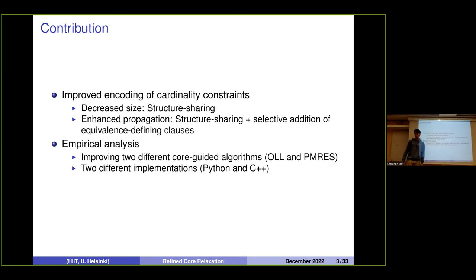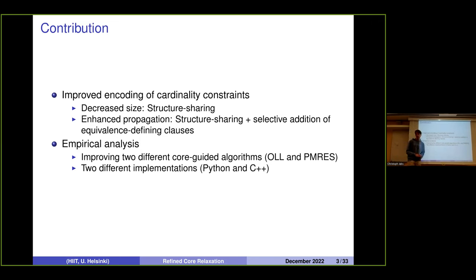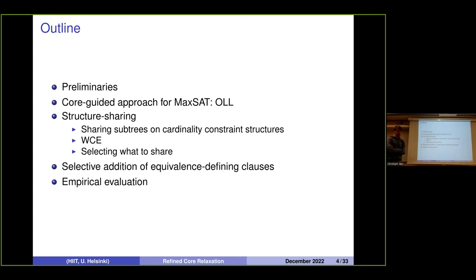More precisely, the contributions of the paper are: we improve the size of cardinality constraint encodings and improve propagation properties. It turns out that using this structure sharing technique and then adding equivalence-defining clauses enables some forms of propagation that wouldn't happen otherwise. We evaluate this technique empirically with two different algorithms and two different implementations. The outline covers preliminaries, the core-guided OLL approach, structure sharing, equivalence-defining clauses, and empirical results.